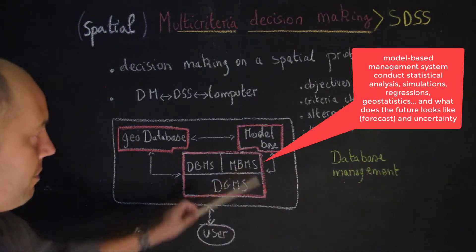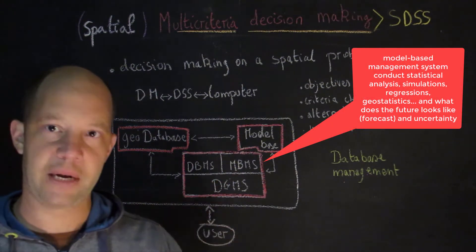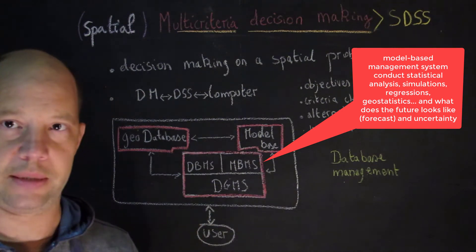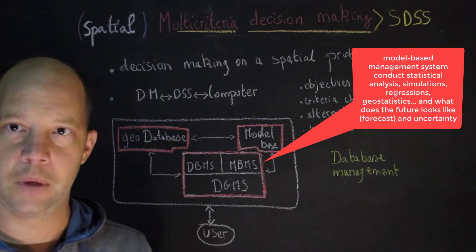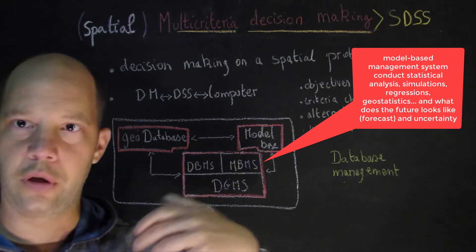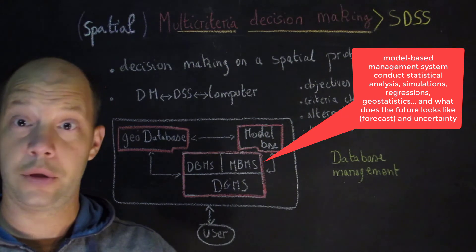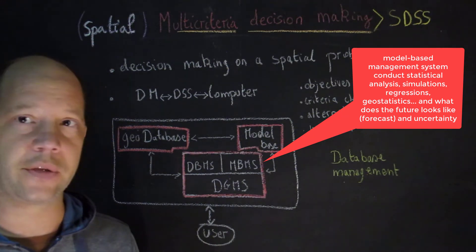What about the model-based management system? And what does it do? A model-based management system in a decision support system allows you to conduct a lot of statistical analysis. Examples could be regression analysis, could be to conduct simulations, could maybe do geostatistical modeling in case of, let's say, water contamination for instance and so on.